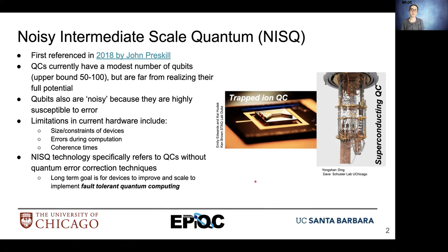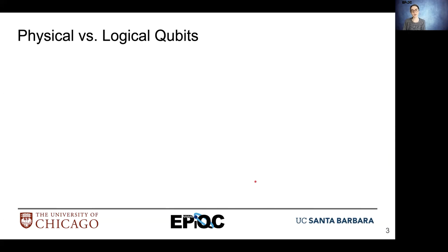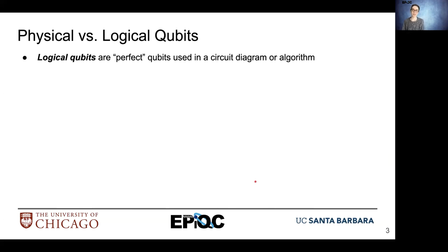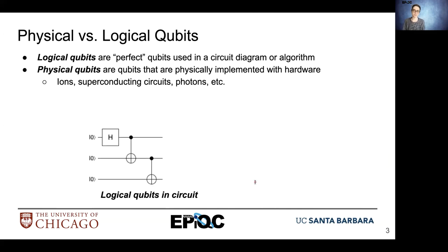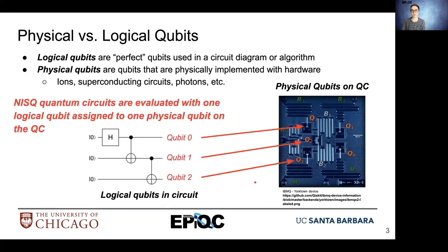In the long term we're hoping to move towards fault tolerant quantum computing methods. A logical qubit is a perfect qubit used within a circuit diagram or algorithm, whereas a physical qubit is a qubit that is physically implemented in hardware. Examples include ions, superconducting circuits, and photons, among others. We have logical qubits within a circuit and we have to map these to physical qubits. In the NISQ era we have a one-to-one mapping of logical qubits to physical qubits, but in the future that will change.